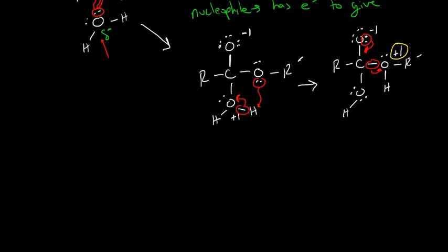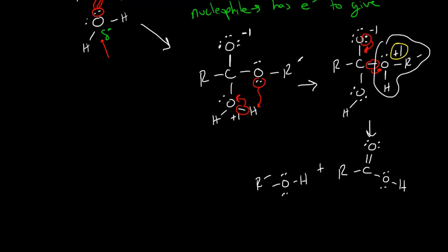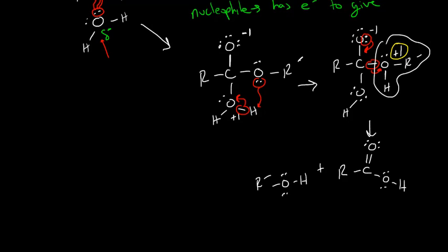If I move up here a little bit, let's redraw this. I have R. This carbon is now double bonded to the oxygen again, and it's bonded to an OH. This part of the molecule is now my alcohol. I have my R prime attached to the oxygen and attached to a hydrogen.